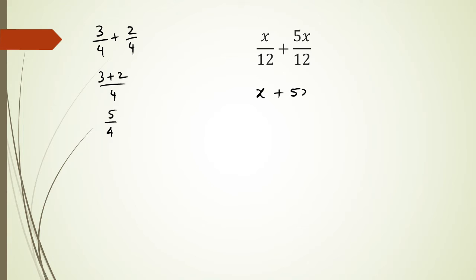So I can write it up as x plus 5x over 12, which means I'm going to get 6x over 12. And of course I can simplify that because 12 and 6 have a common factor of 6.